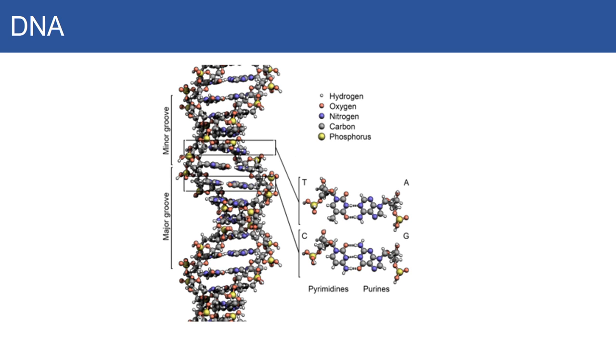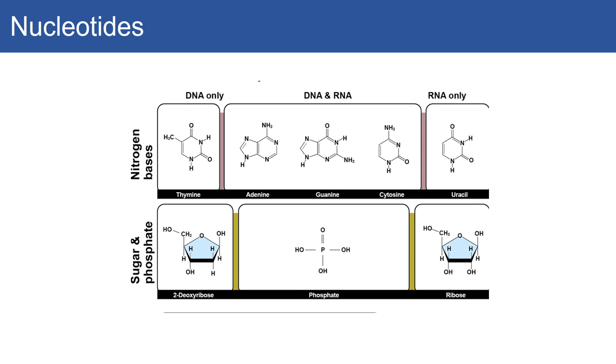DNA is made up of nucleotides, the monomers of DNA. Each nucleotide is composed of three elements: a sugar (deoxyribose in the case of DNA), a phosphate group, and a nitrogenous base.